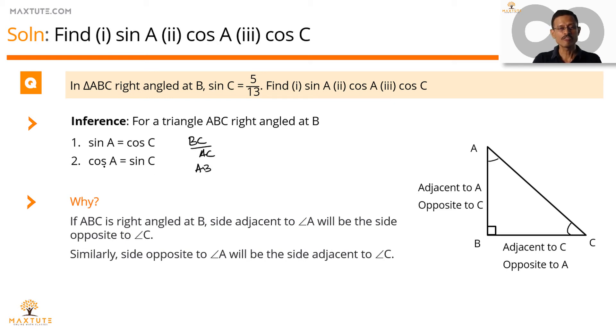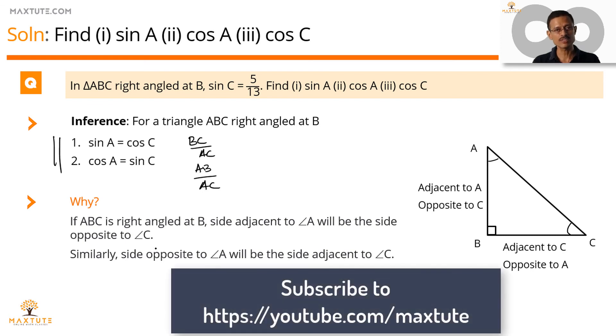So cos A or sin C, when we found out the side adjacent to A, it ended up being the side opposite to C. So it is AB divided by hypotenuse, which is equal to AC. So in any right triangle, right angled at B, this will hold good. Sin A will be equal to cos C and cos A will be equal to sin C.